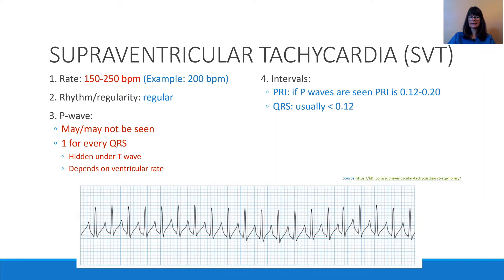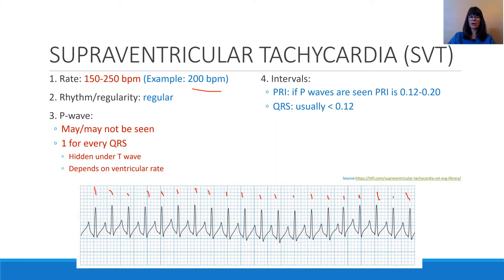Looking at the rules of EKG interpretation and the four steps that we usually go through: in supraventricular tachycardia, the rate is usually quite high — 150 to 250 beats per minute. In our example here, it's 200 beats per minute. Remember, we do this by counting the number of QRS complexes on a six-second rhythm strip and then multiplying by 10. So if we count here — counting 20 QRS complexes — multiply by 10 gives us a high rate of 200. So quite fast. The rhythm is regular; we can see with the naked eye that the distance between all of these QRS complexes is really even, so it's a regular rhythm.